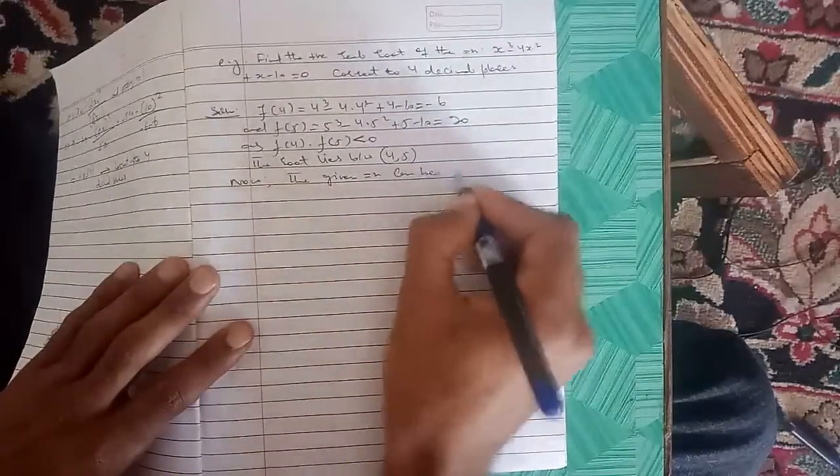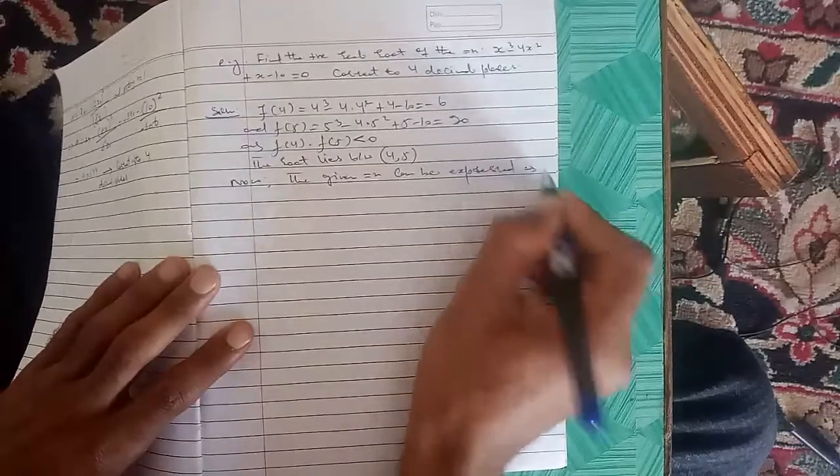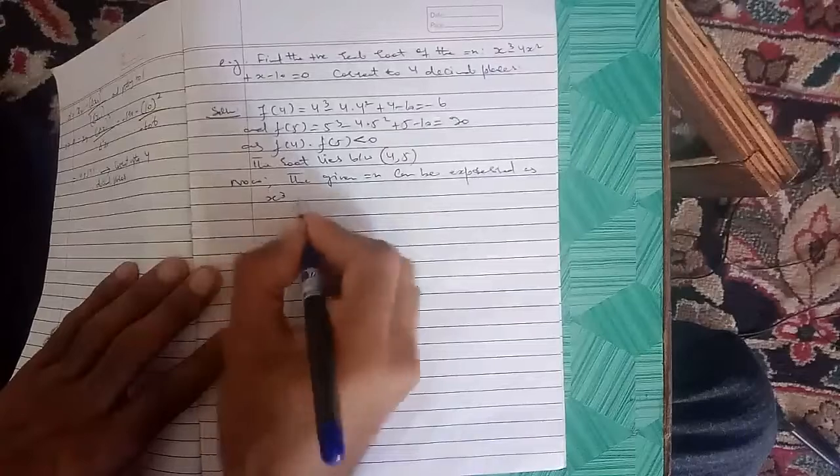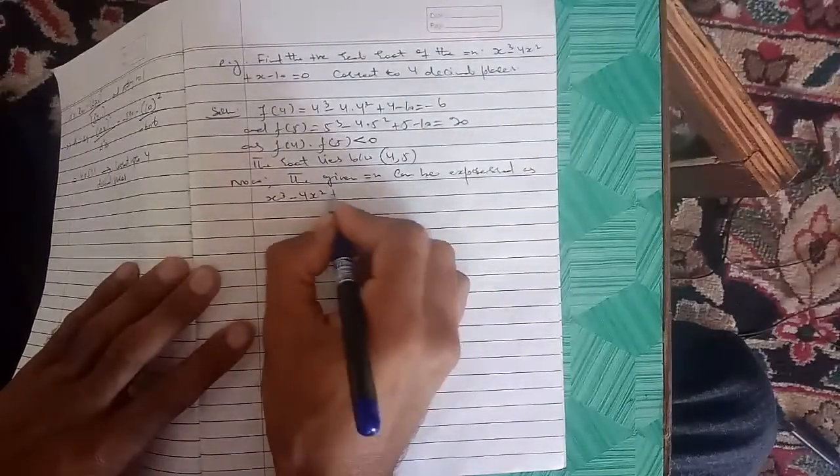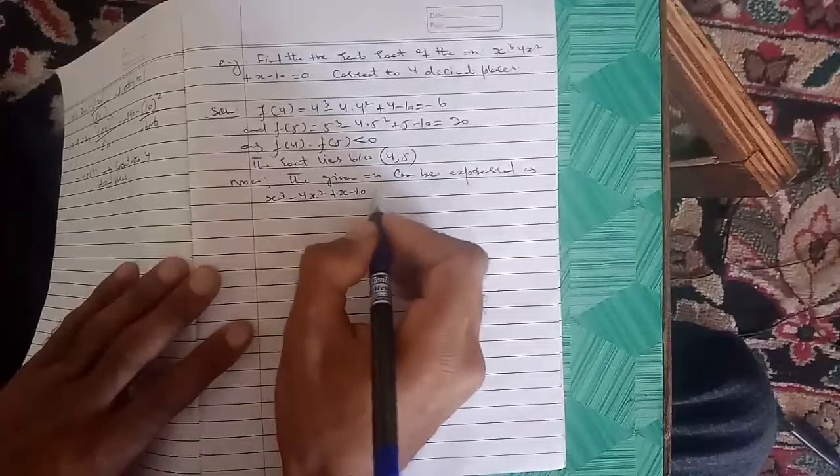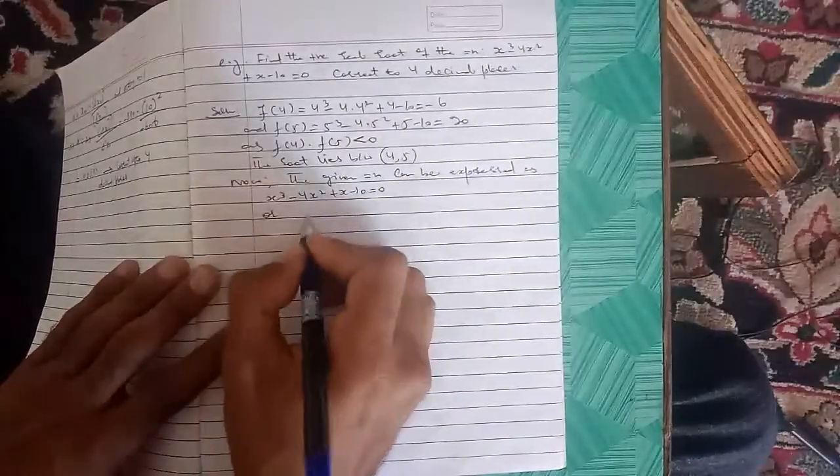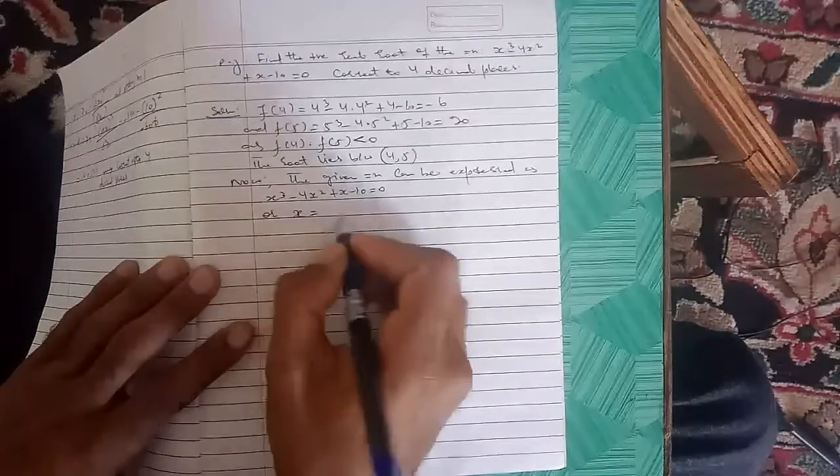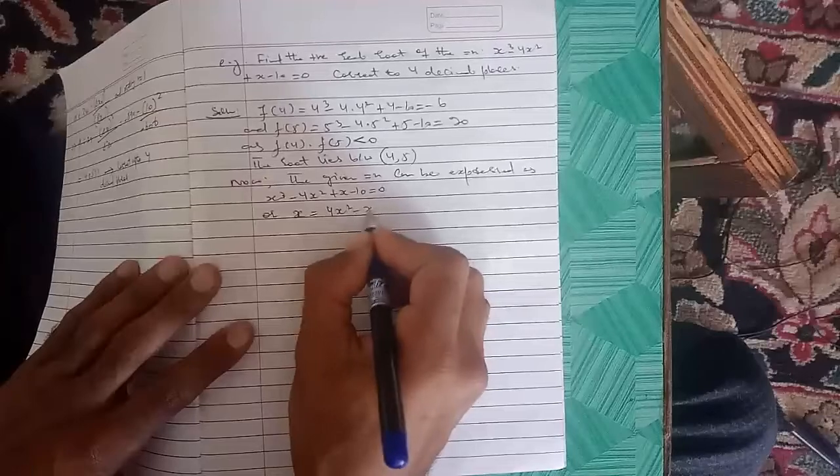Now the given equation x³ - 4x² + x - 10 = 0 becomes x equals 4x² - x³ + 10.